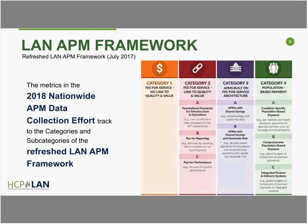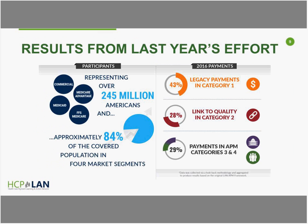The refresh group did not conclude that Category 4C payments are superior to other Category 4 payments. Looking at last year's measurement results: data from last year's survey represented over 245 million Americans, approximately 84% of covered lives across commercial market, Medicare Advantage, Medicaid, and fee-for-service Medicare. Based on this data set, we concluded that 43% of payments remain in traditional fee-for-service, 28% reside in Category 2, and 29% are in Categories 3 and 4.